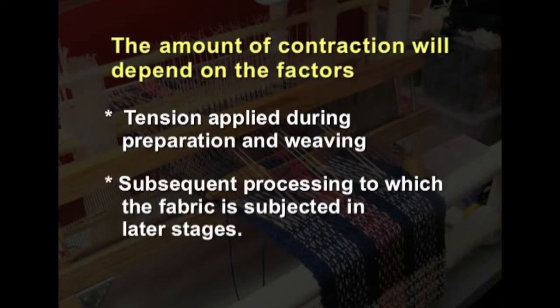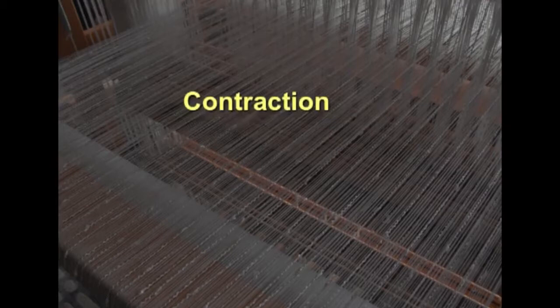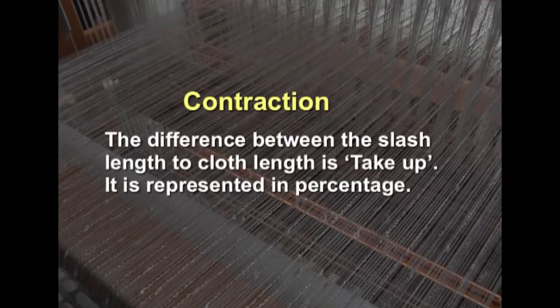Subsequent processing — such as bleaching or dyeing — must also be considered so that the fabric we make is suitable to the order given or to fabrics available in the market for a specific end use. The term used to represent this contraction — that is, the difference between the slash length and the cloth length — is take-up, and it is represented as a percentage.